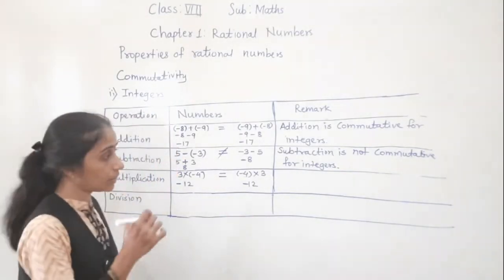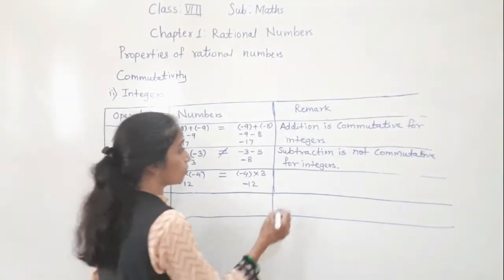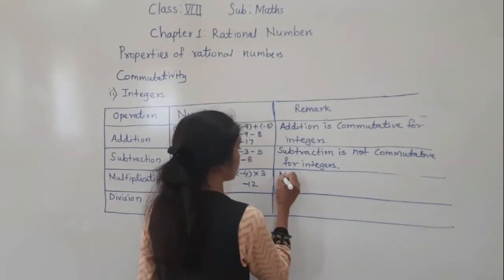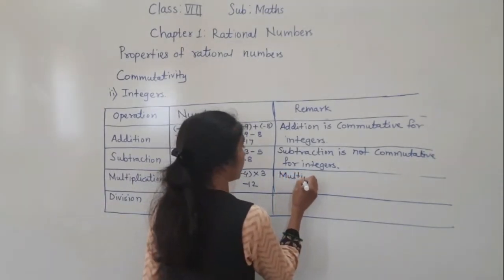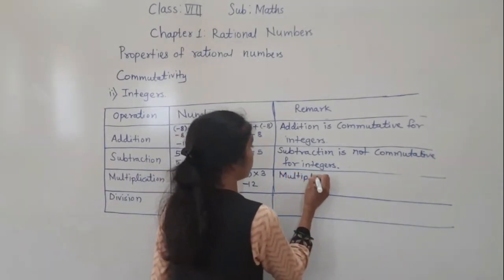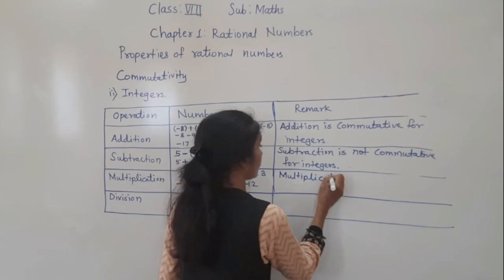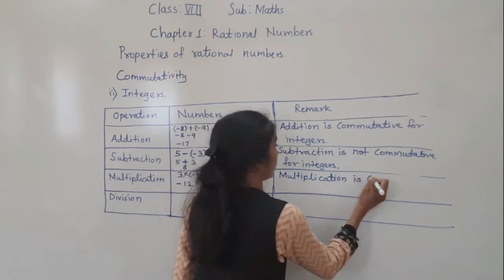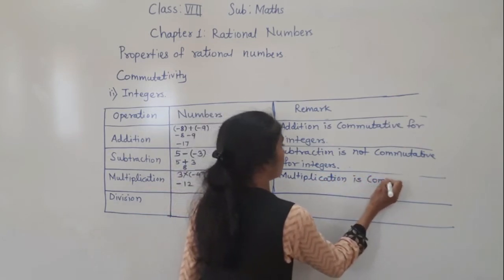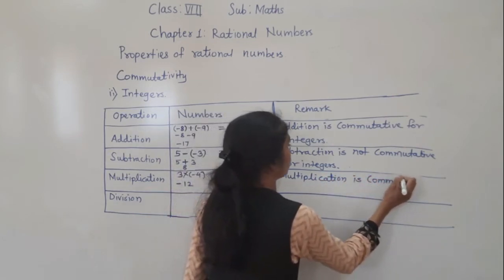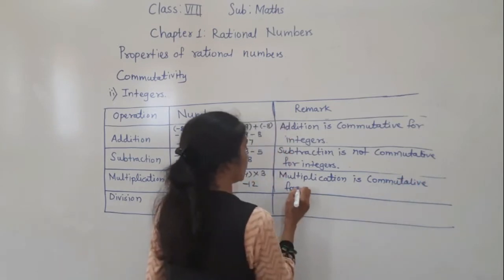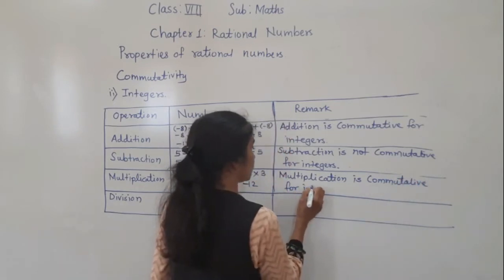So a multiplied by b is equal to b multiplied by a — multiplication is commutative for integers.